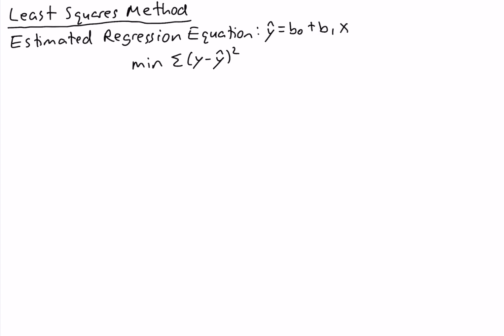The term 'least' in least squares method is there because we're minimizing, and the term 'squares' is there because we're squaring.